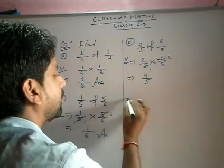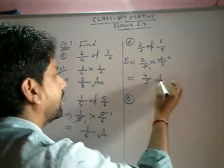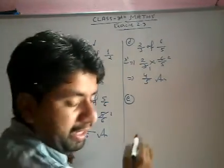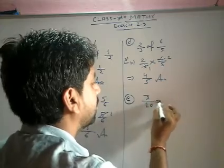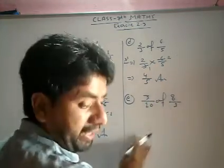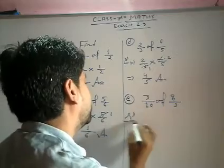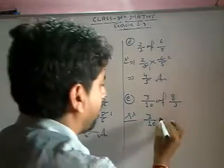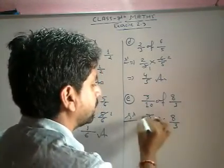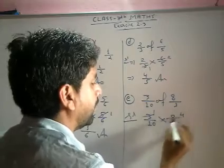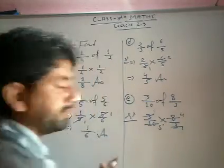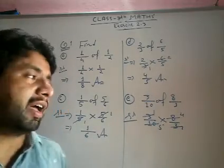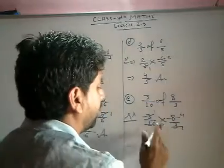E: 3 upon 10 of 8 upon 3. 3 upon 3 and 2 upon 8 to 5 to 10. 3 upon 3, 3 se 3 cancel hoga. 2 upon 8 to 5 to 10, 4 upon 5.